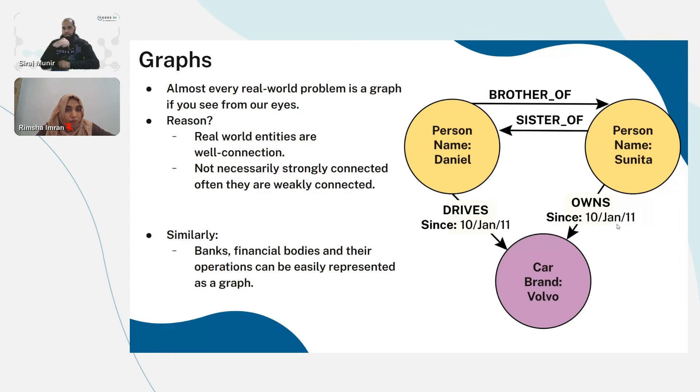Coming back to our case of financial or anti-money laundering, financial bodies and banking sectors can also be represented as graphs because we have transactions, a huge network of transactions. Every transaction can be represented as a graph. For example, person A is sending money to person B, so there is a sends to relationship, and this represents the transaction or amount.